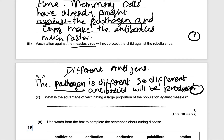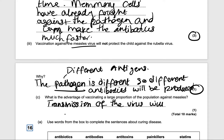What is the advantage of vaccinating a large proportion of the population against measles? If you vaccinate a large proportion of the population, the transmission of the virus will be lower. That will get you one mark.